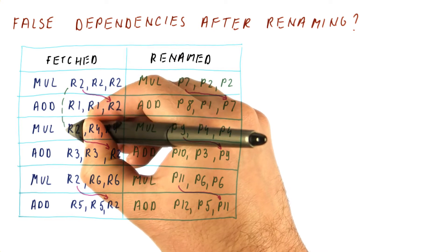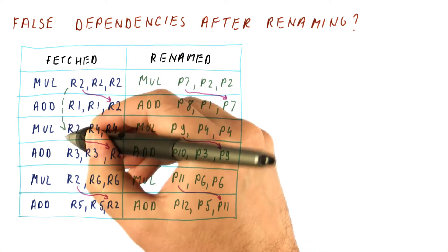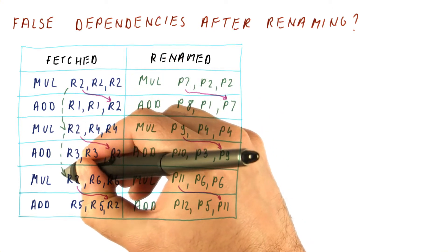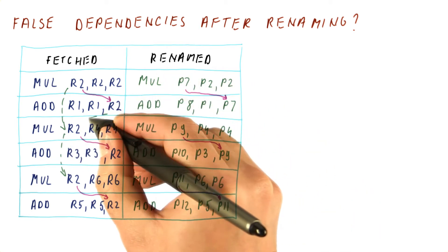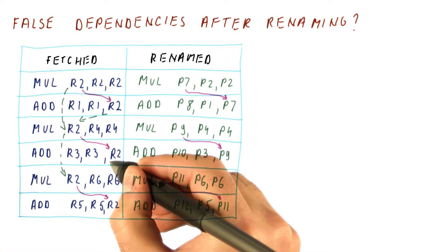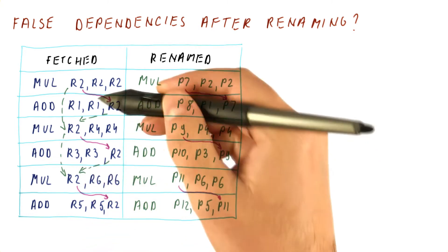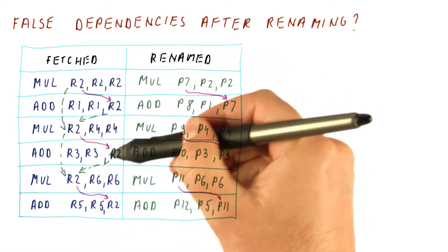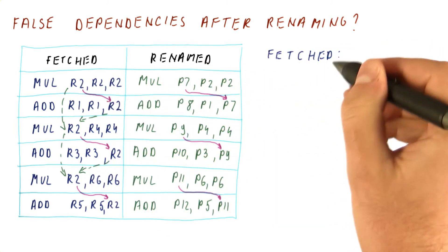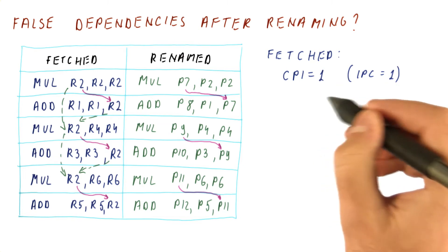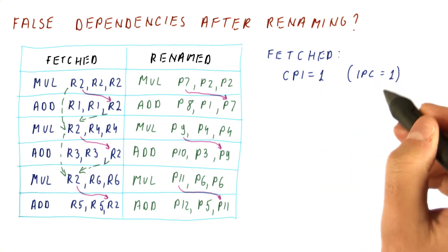However, here we also have an output dependence from R2 here to R2 here, and then another one to here. And we have an anti-dependence here, and one here. So if we look at all of the dependencies, then basically this is a sequential program. So for our fetched program, we have the CPI of one, which is also the IPC of one.